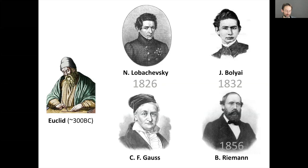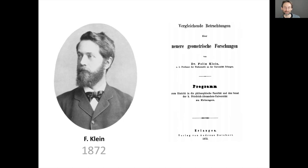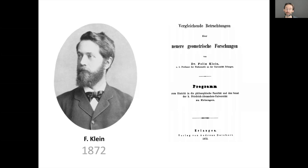The solution came from Felix Klein, a young professor appointed at the University of Erlangen in 1872. As was custom in Germany at the time, he was asked to write a research prospectus outlining his career's research. He was only 23 when he got this full professorship, and he wrote what entered the history of mathematics as the Erlangen Program.